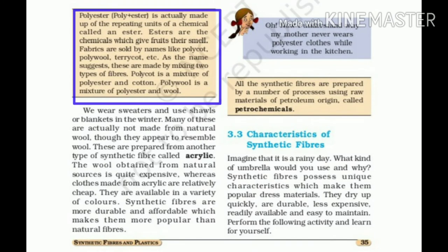Polyester means poly plus ester. It is a repeating unit of chemicals called an ester. Esters are chemicals which give fruit their smell while they ripen. Fabrics are sold with names like polycott, polywool, and terricot — these are mixtures of two types of fibers. Polycott is a mixture of polyester and cotton. Polywool is a mixture of polyester and wool. Terricot is a mixture of terrylene and cotton.